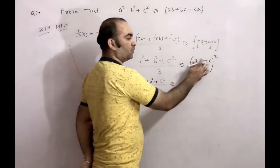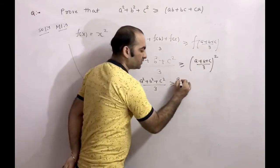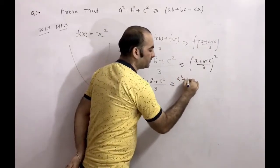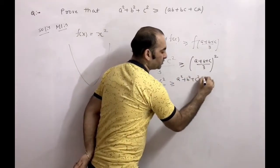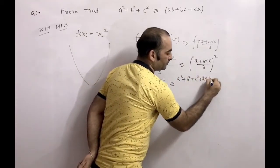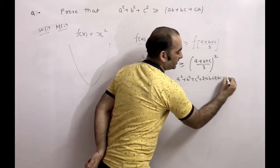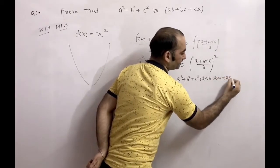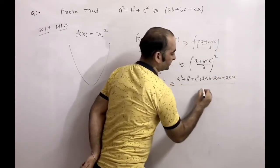Expanding the right side: (a + b + c)² / 9 = (a² + b² + c² + 2ab + 2bc + 2ca) / 9.